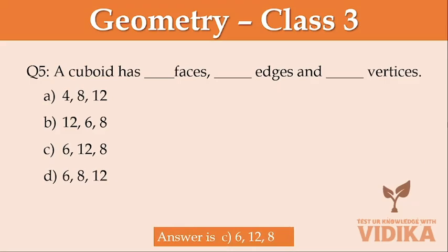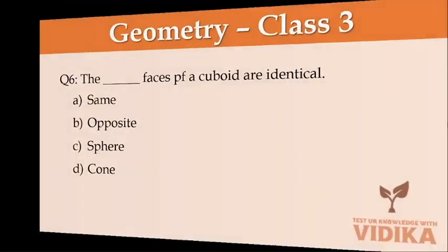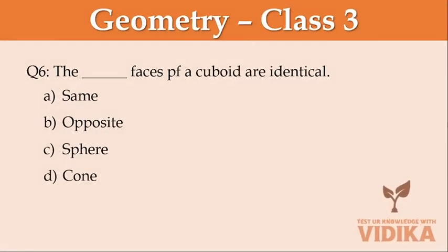The dash faces of a cuboid are identical. Option A same, option B opposite, option C sphere, option D cone.